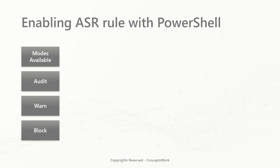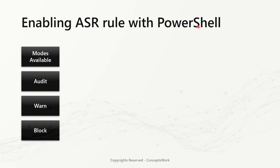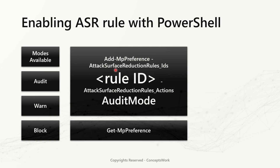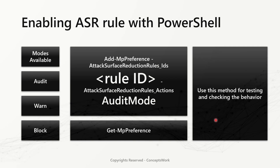To enable an attack surface reduction rule with PowerShell, the process is exceptionally simple. You need to know the three available modes: audit, warn, and block. The command to add a rule is Add-MpPreference, followed by the rule ID and the mode. Once changes are applied, you can use Get-MpPreference to check whether the rules are applied and list their current state.